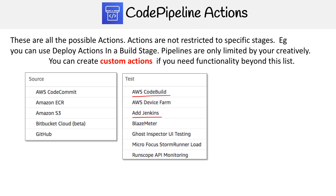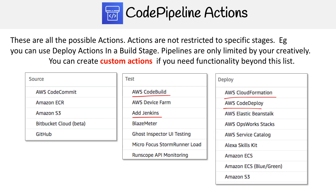Then you have your test actions. The most common ones you're going to be using are CodeBuild and Jenkins, but there are a bunch of other options as well. These are generally for building code and then running test suites and getting test coverage.